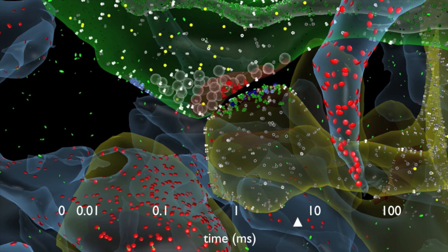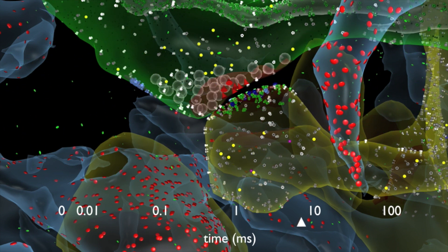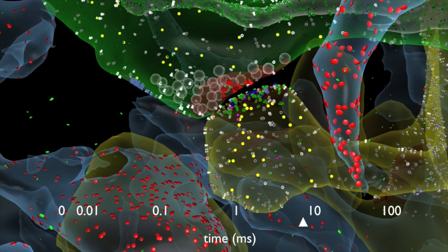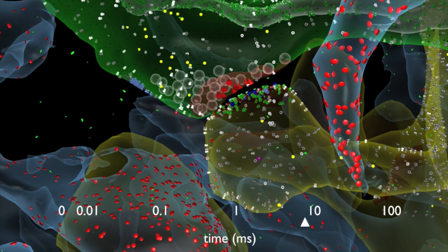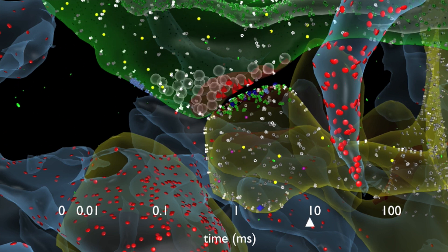These neurotransmitters diffuse to the dendrite, binding and activating receptor proteins on the second neuron. Neurotransmitters also leak out into the surrounding area and are reabsorbed by red transporter proteins on the blue astrocytes.